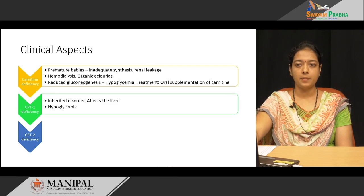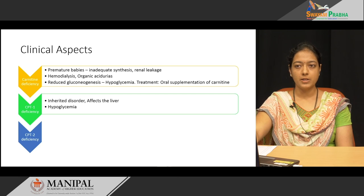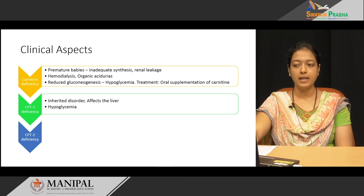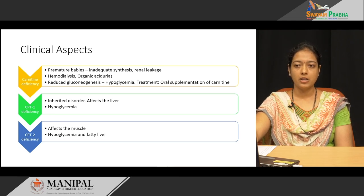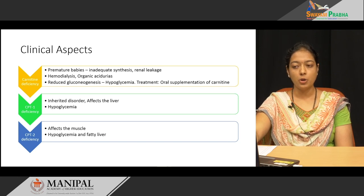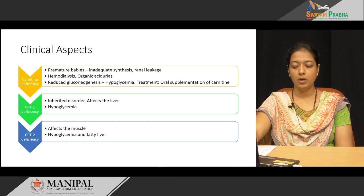Carnitine palmitoyl-transferase-1 deficiency is an inherited disorder mainly affecting the liver, with hypoglycemia as the important symptom. Deficiency of carnitine palmitoyl-transferase-2 mainly affects the muscle, and in severe conditions can also affect the liver, with hypoglycemia as the main symptom.